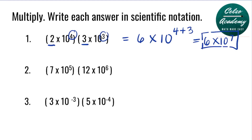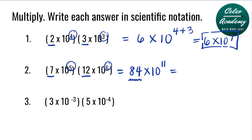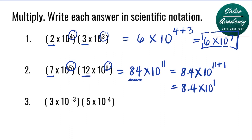Question number two: 7 times 10 to the fifth, multiplied by 12 times 10 to the power of 6. First, multiply the a values 7 and 12, which is 84. Now add the powers 5 and 6 to get 10 to the power of 11. In scientific notation, the a value of 84 is not allowed because a has to be greater than or equal to 1 but less than 10. So we rewrite 84 as 8.4, and the power increases by 1. The final answer is 8.4 times 10 to the power of 12.